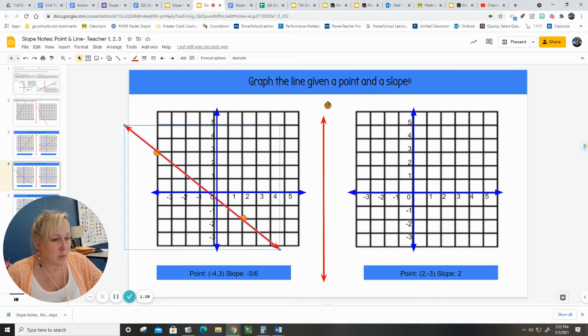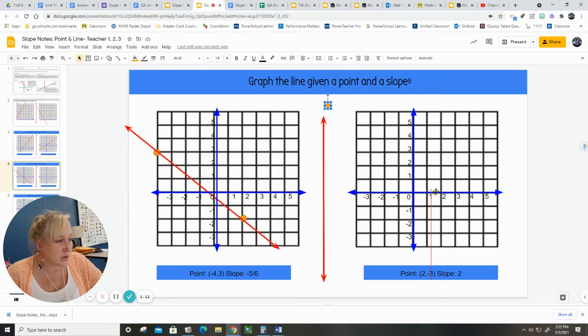We're going to do the same thing over here. We have a point of 2. So 2, negative 3. I dragged my point down there. And the slope is 2. Remember that 2 means 2 over 1.